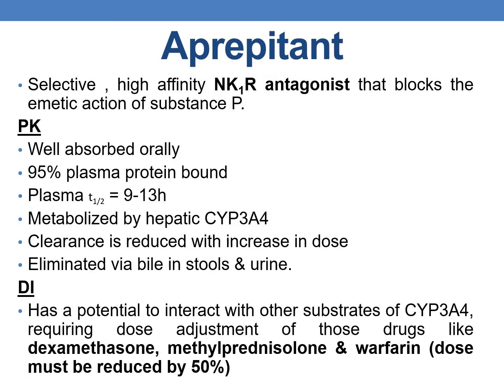Aprepitant is a selective, high-affinity NK1 receptor antagonist that blocks the emetic action of Substance P. Regarding pharmacokinetics, it is well absorbed orally, 95% plasma protein bound, with a plasma half-life of 9 to 13 hours. It is metabolized by hepatic CYP3A4, clearance is reduced with increasing dose, and it is eliminated via bile in stools and urine.